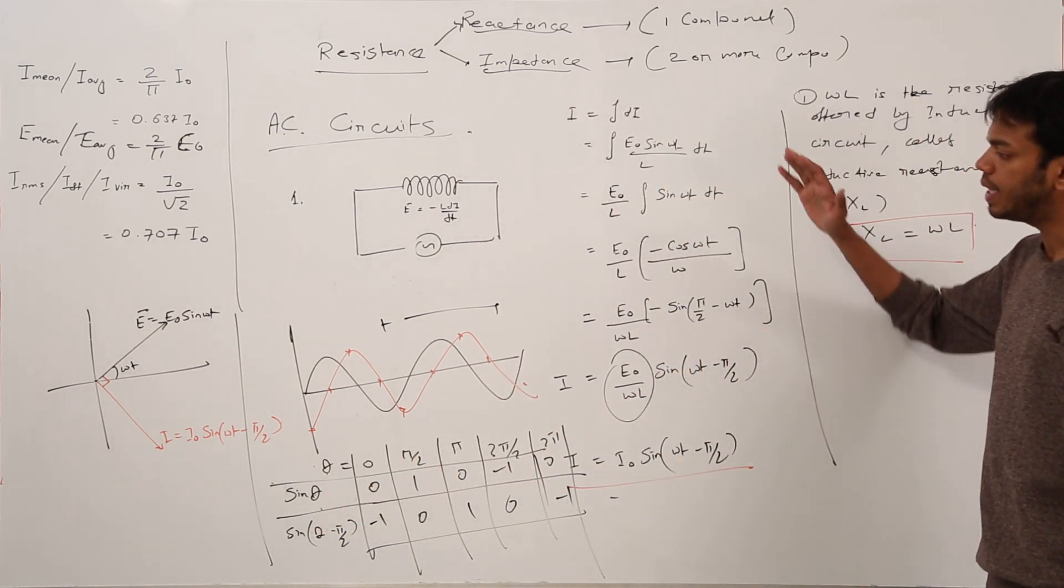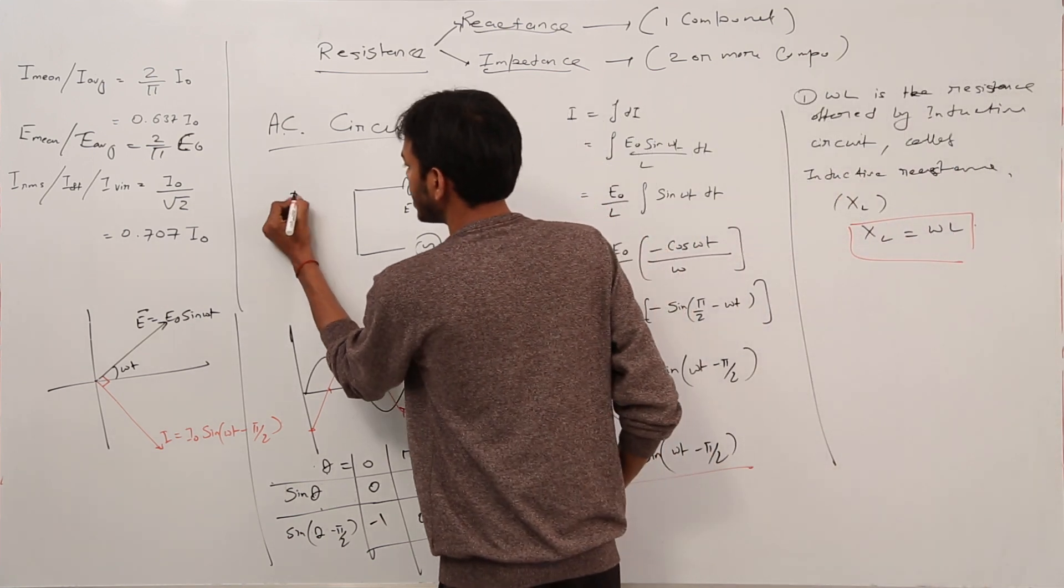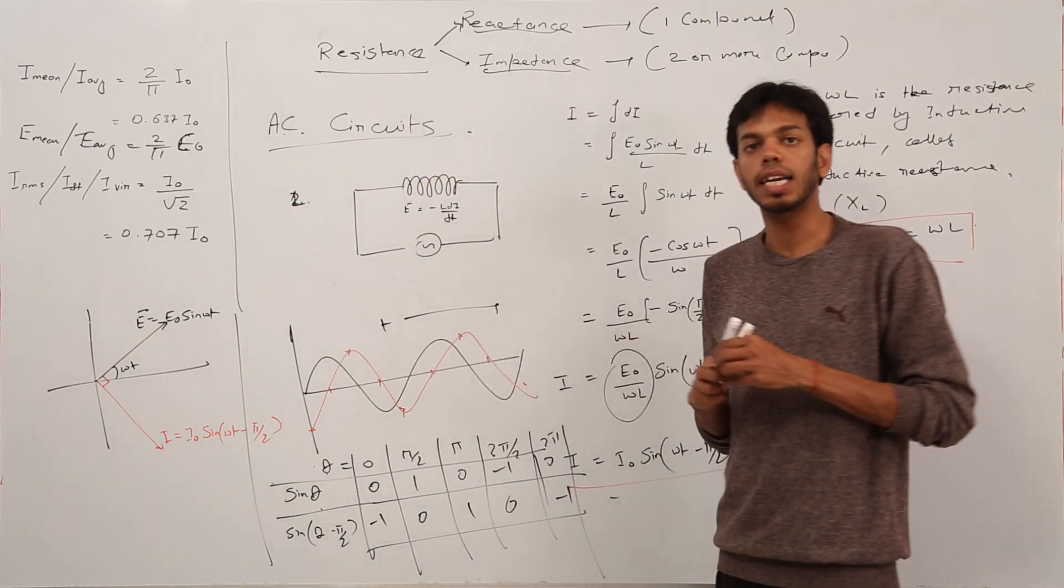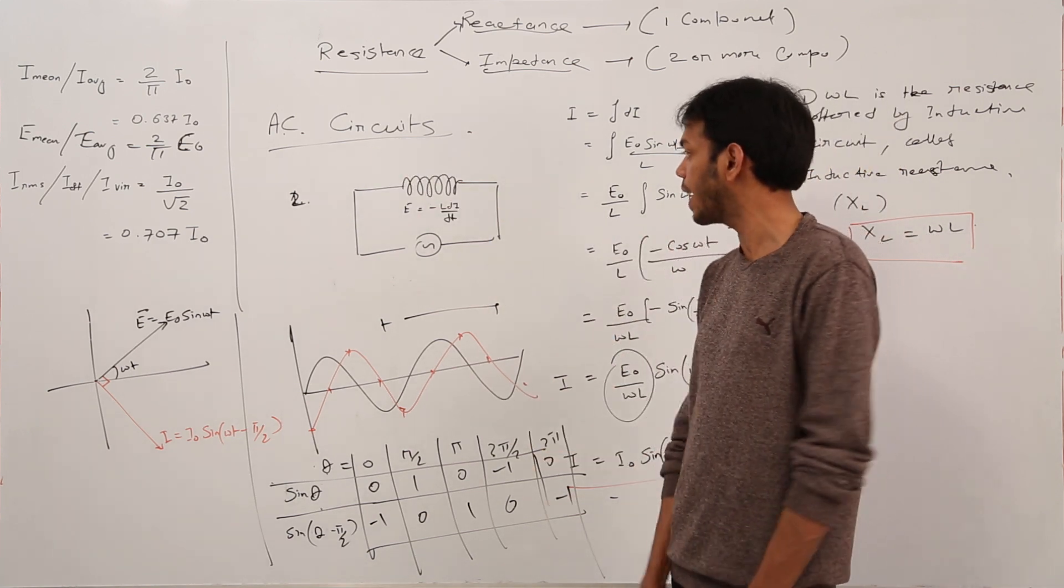So, this is the AC circuit. Change the numbering—this is number 2. AC circuit having inductor only. That is the heading of this topic, all right?